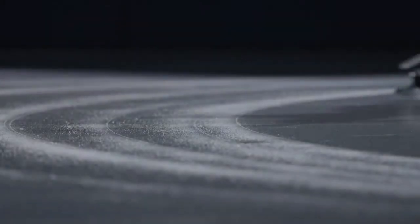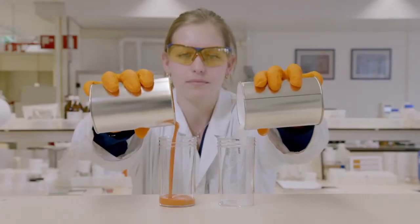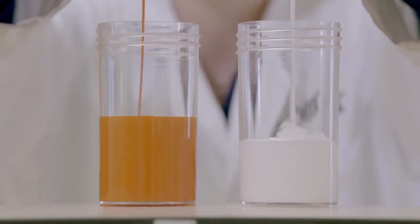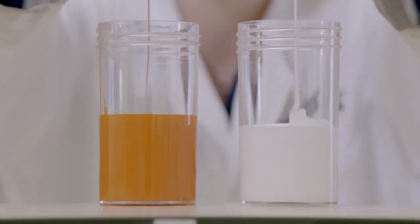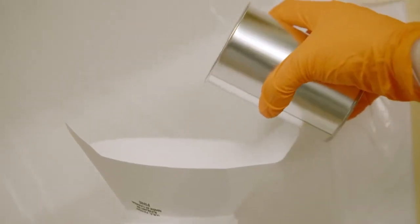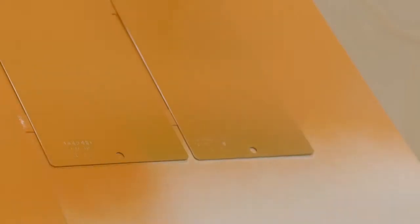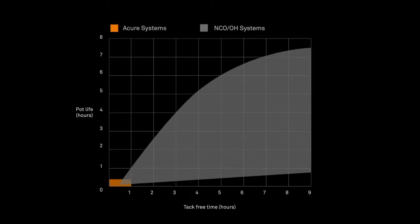You can create extremely fast drying coatings with hours of pot life. With fast drying 2K systems such as urethanes and aspartates, fast dry comes with a severe handicap of short pot life. Acure's unique block catalyst completely decouples this relationship, giving you the best of both worlds. With Acure a formulator can dial in exceptionally fast dry times while retaining hours of pot life.